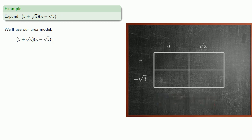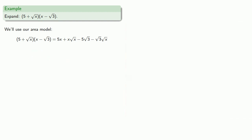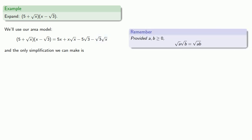So we'll compute the areas of our four individual rectangles, and our product will be the sum of all four areas. And the only simplification we can really make is going to come from this product of square roots. Remember that provided that our radicands are both positive, the product of a square root is the square root of the product.